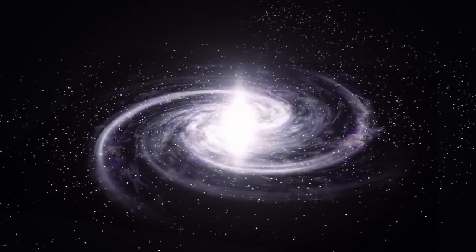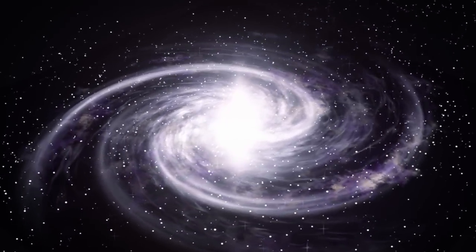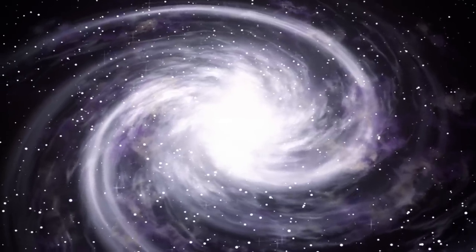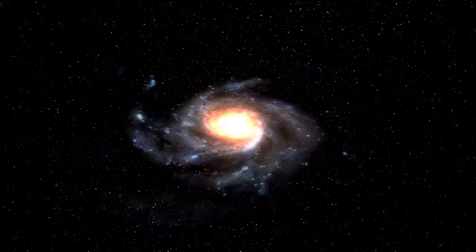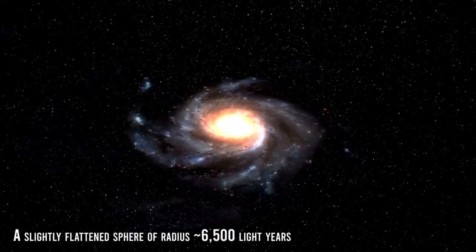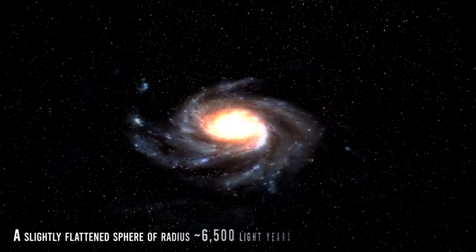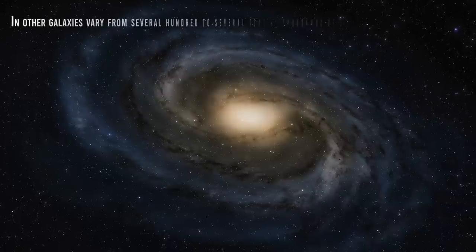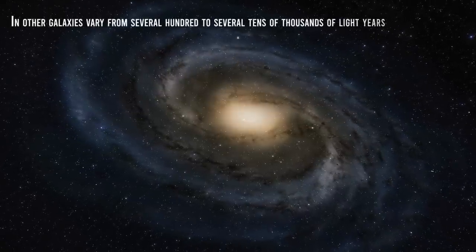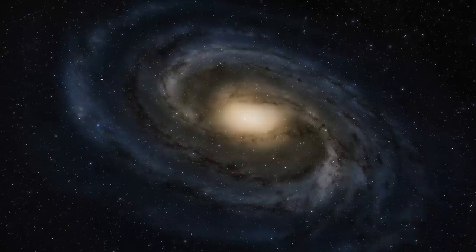The term bulge is used to describe the dense spheroidal swarm of stars often found in the centers of spiral and S-zero galaxies. The bulge of the Milky Way appears to be fairly typical, a slightly flattened sphere of radius approximately 6500 light years, while bulge sizes in other galaxies vary from several hundred to several tens of thousands of light years, depending on the type and size of the galaxy.